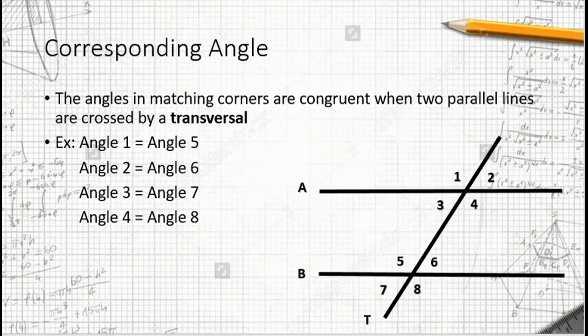There are now four pairs of corresponding angles. Angle 1 is congruent to angle 5. Angle 2 is congruent to angle 6. Angle 3 is congruent to angle 7. And angle 4 is congruent to angle 8.